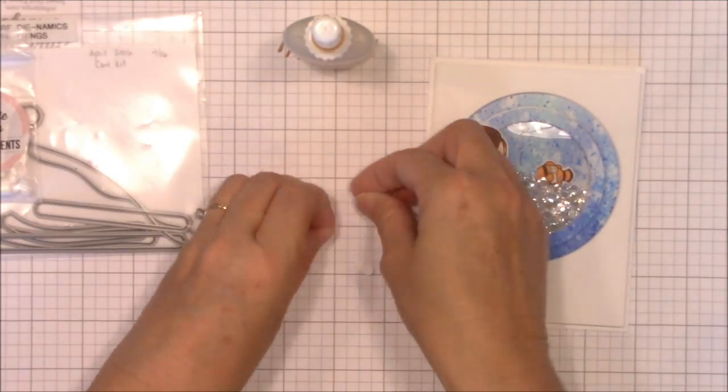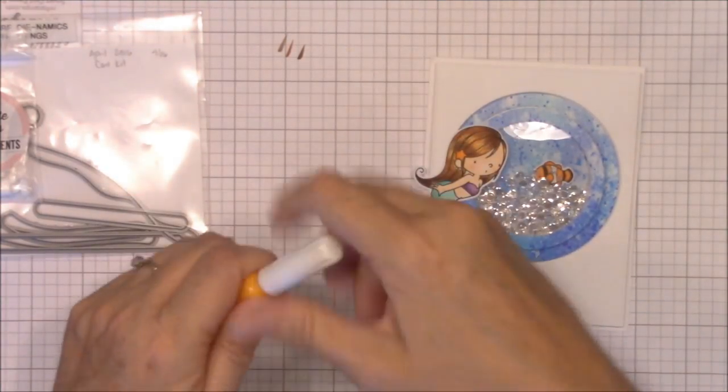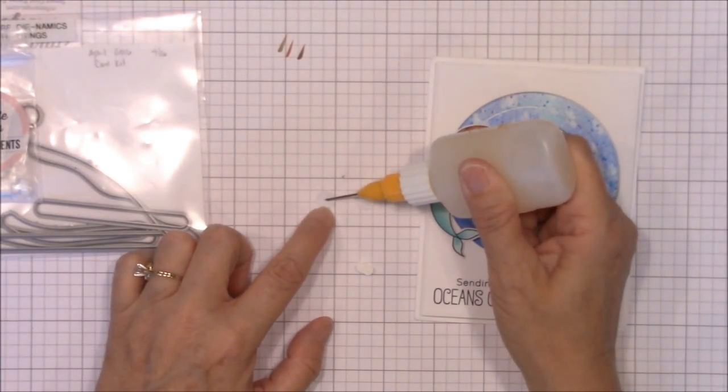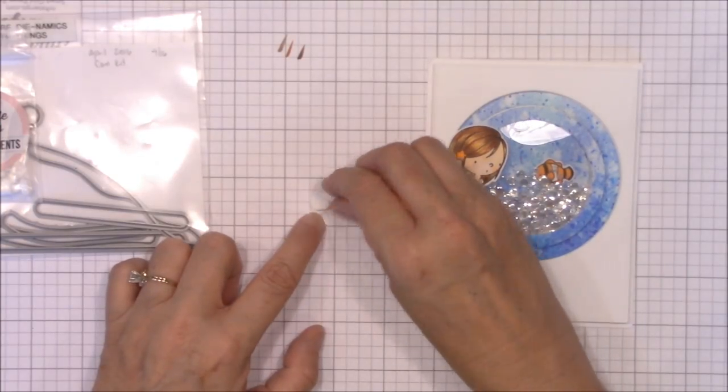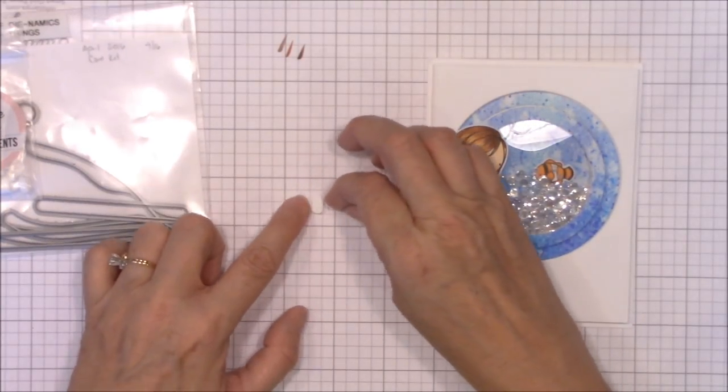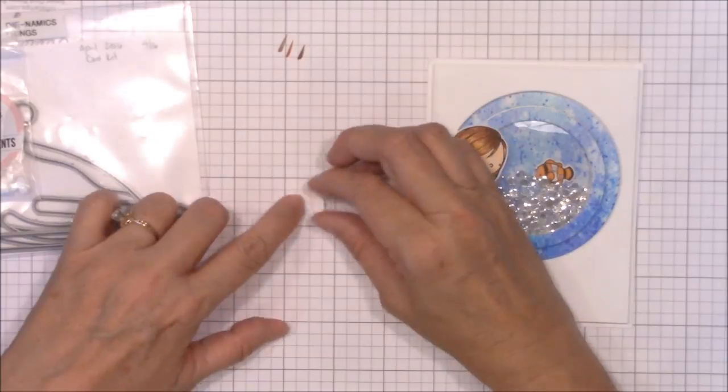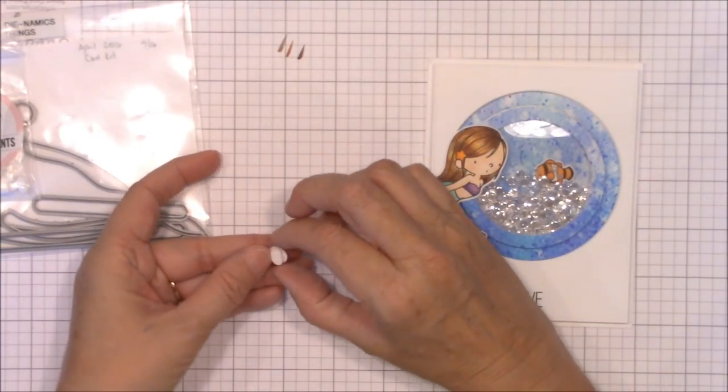I used the circles die from the Surf and Turf dies to die cut two circles from some white cardstock. Flip them over to the back side and add a small drop of glossy accents to the center of one of the circles. Place a slider element on top of that glue and hold it there for a few seconds to let the glue set.